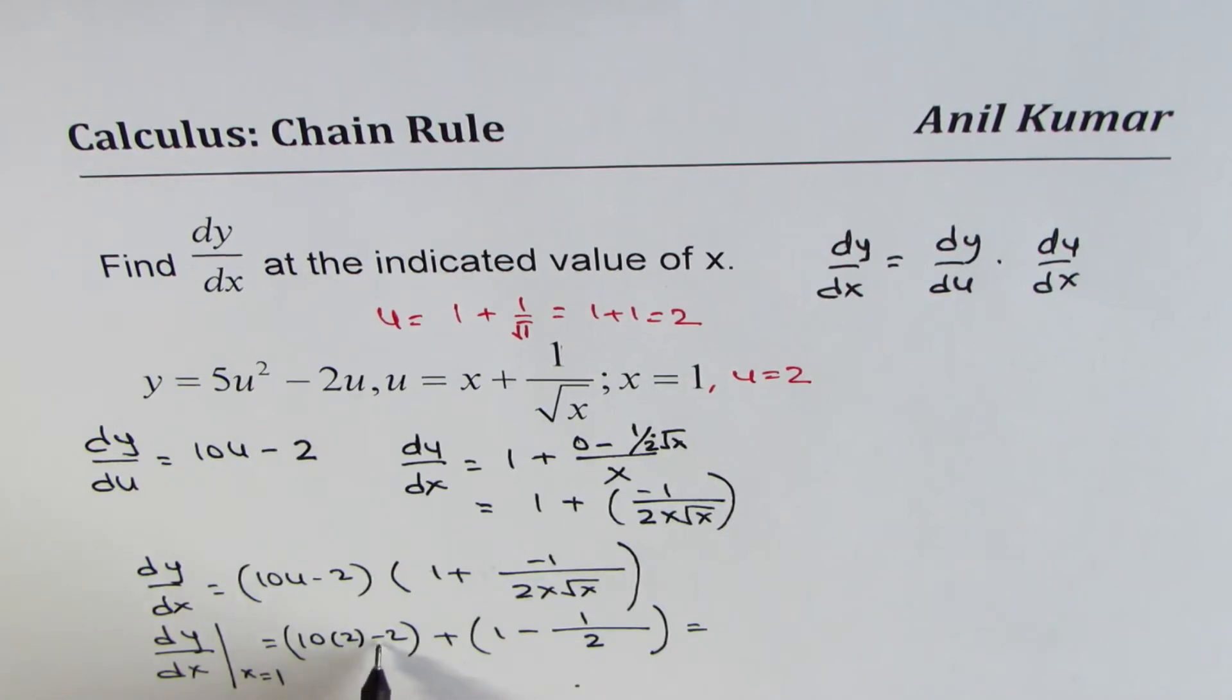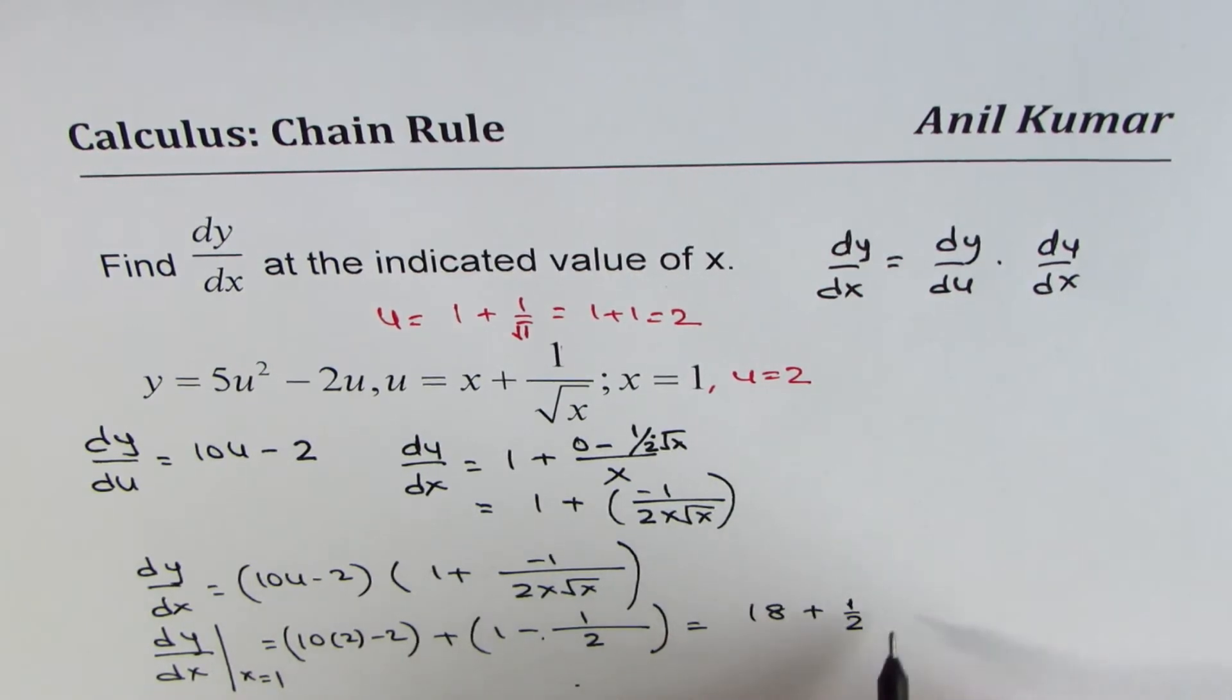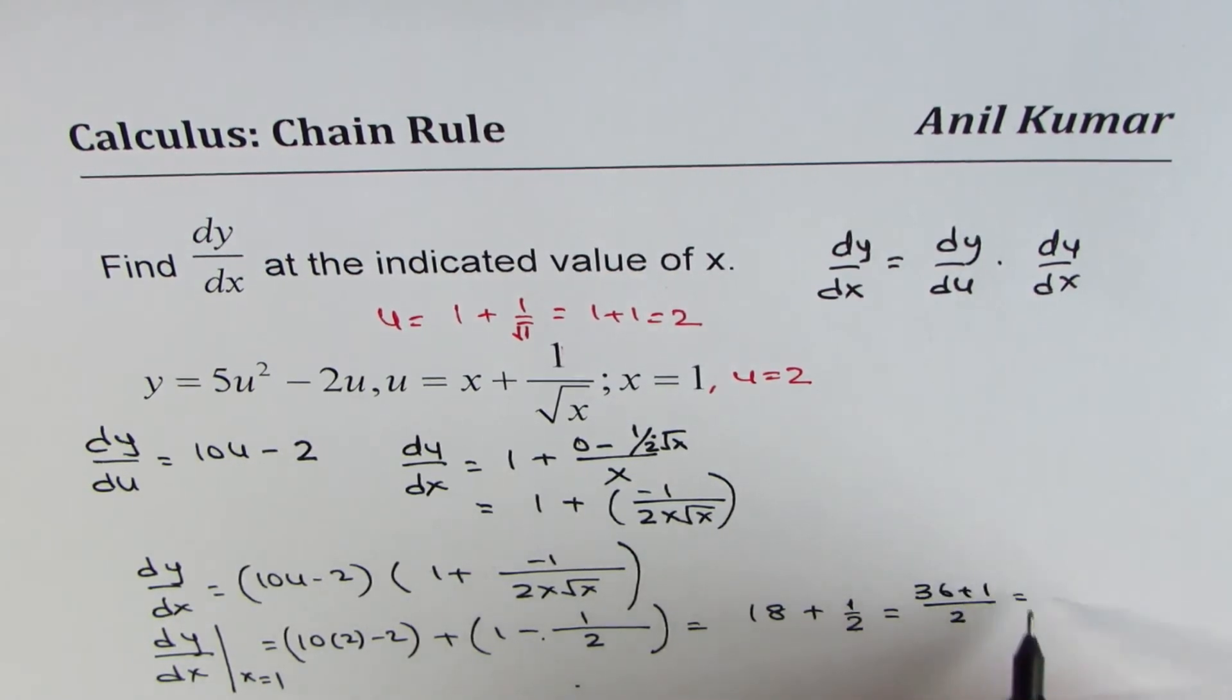And that gives us 20 minus 2, which is 18, plus 1 minus half, which is half. So that gives us common denominator as 2, 36 plus 1, or 37 over 2.